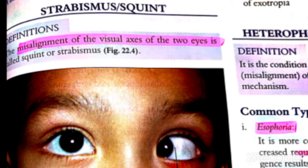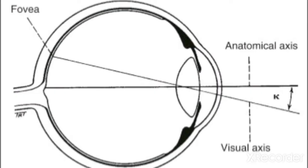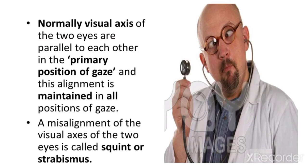We also call it strabismus. It is the misalignment of the visual axis of both eyes. We have the optical axis, which is the center of the eyeball, and we have the visual axis, which is the line from the fovea. If there is misalignment of both eyes' visual axes, we say that this is a squint.